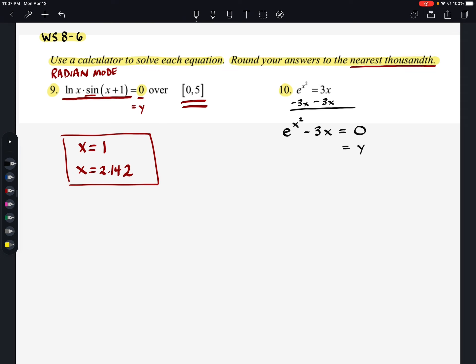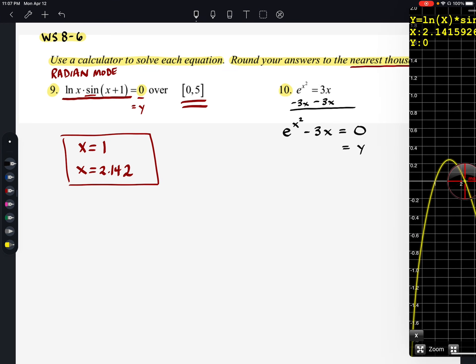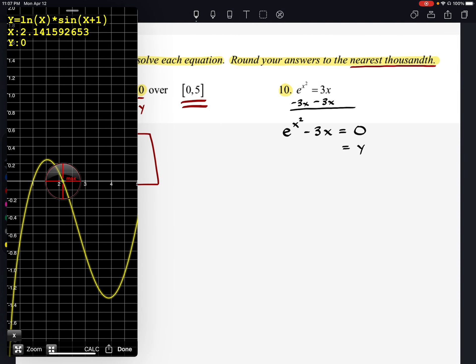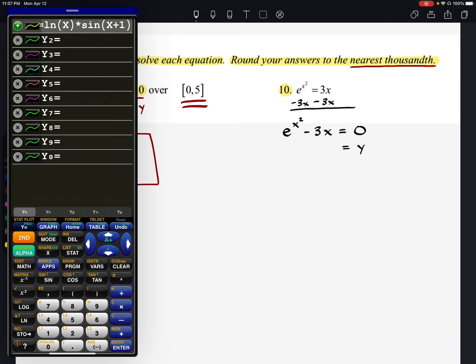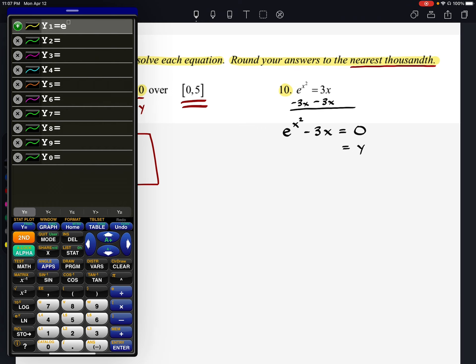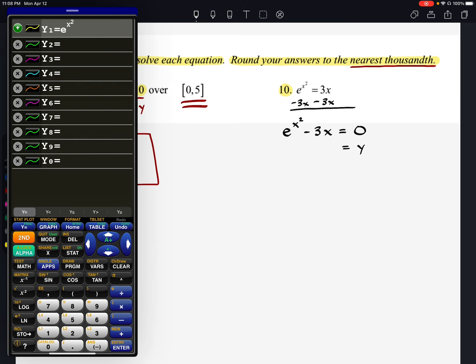I'm going to make this equation now say E to the power of X squared minus 3X equals zero. And again, right, that's going to be my Y value. And I'm going to type that in. This one doesn't really give us an interval to look at, but it's also not a periodic function. So let's go ahead and Y equals. We will clear this one out. And we're going to say E raised to the power of X squared. And we have minus 3X. And let's go to graph.